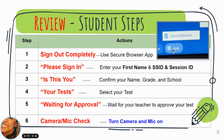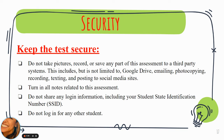Just a review of the steps: sign out of your Chromebook completely, do not put in your password, go straight down to the App Waffle, find Secure Test Browser, enter your first name only, your SSID, and session ID from your teacher. Confirm it's you, select your test, wait for your teacher's approval, and turn your camera and mic on. To keep the test secure, you cannot take pictures, record, or save any part of this assessment — this includes emailing, photocopying, putting it in Google Drive, recording, texting, or posting to social media. All notes after your test need to be confiscated and trashed. You cannot share your login information with anyone or log in for any other student.